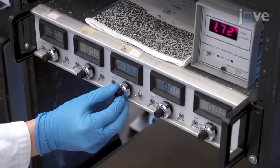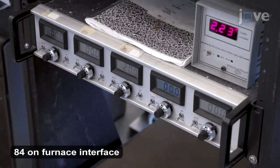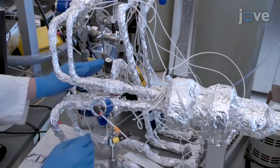Set the mass flow controller to 20 cubic feet per minute and the furnace temperature to 90 degrees Celsius. Open the manual valve to the titanium tetrachloride and water.